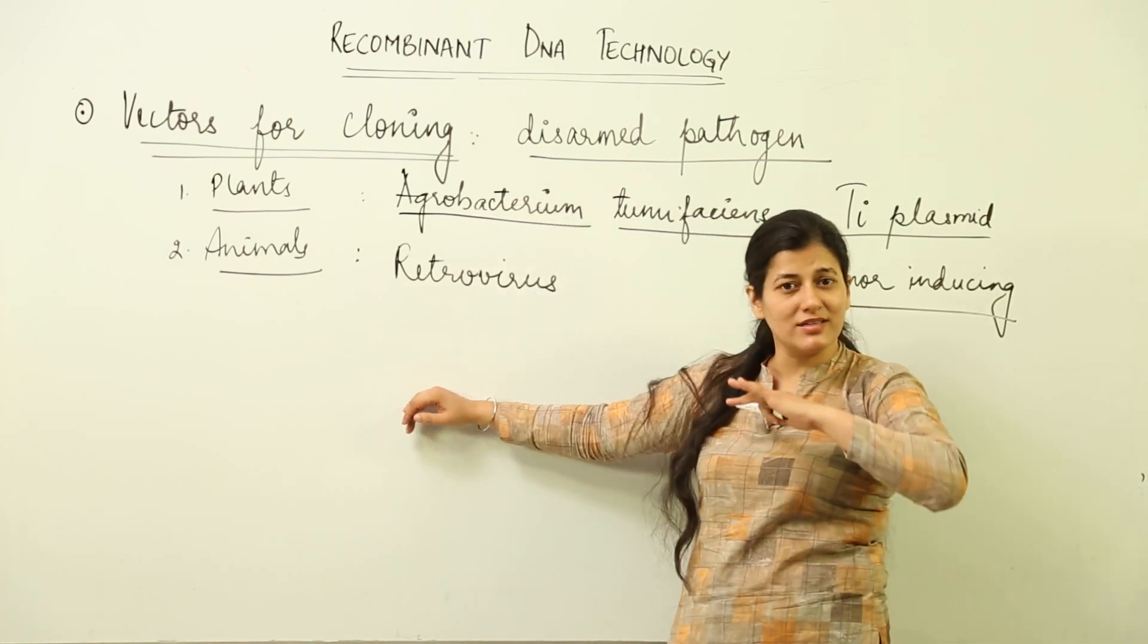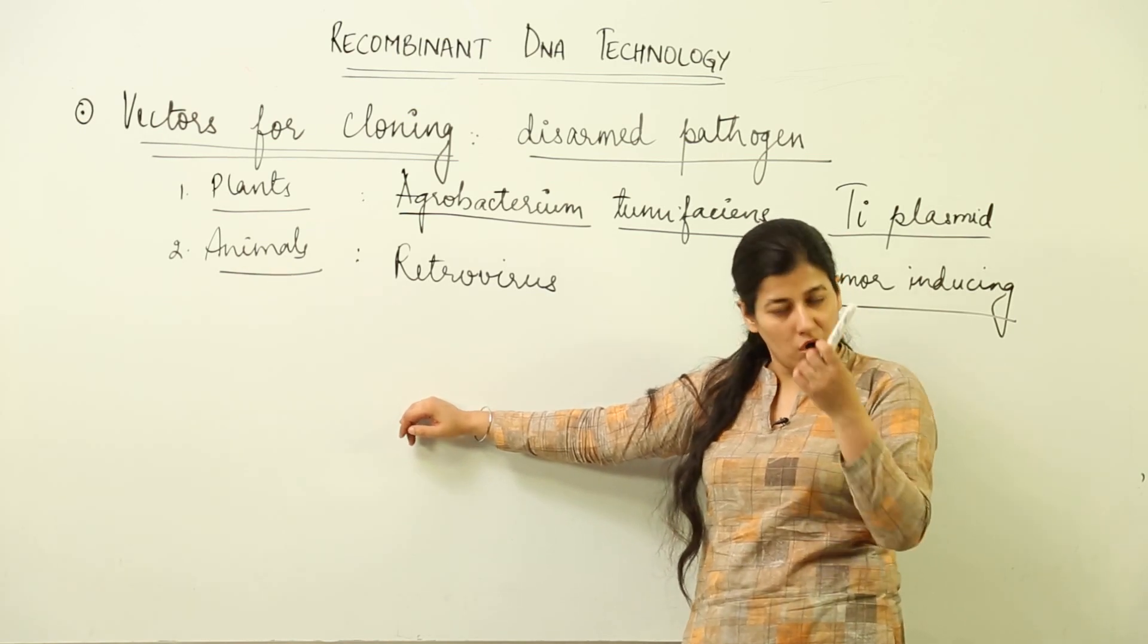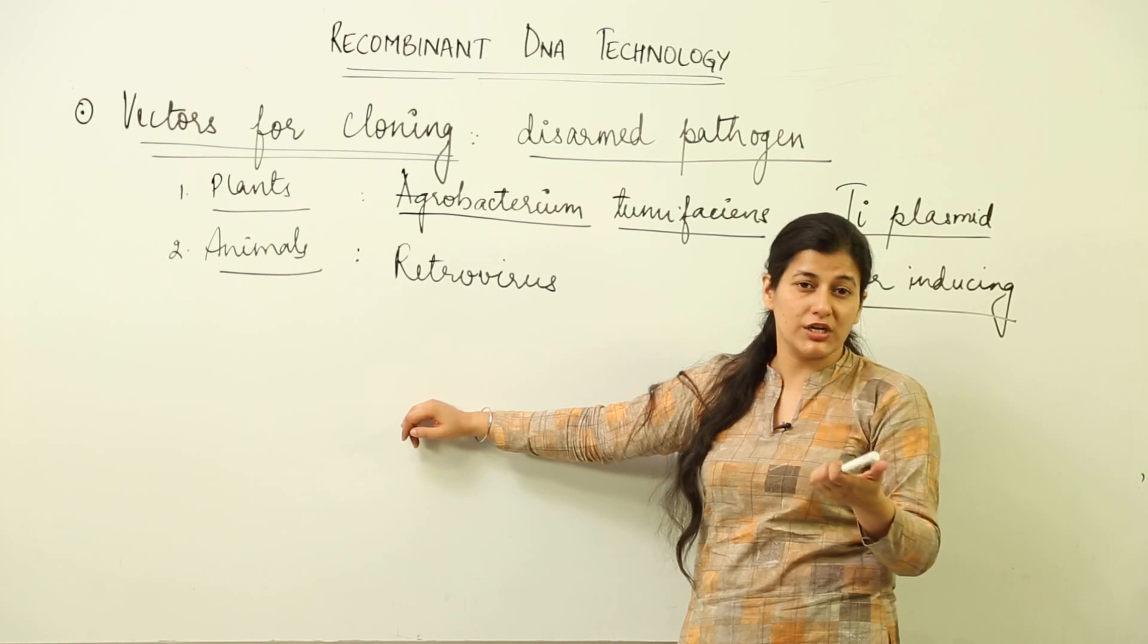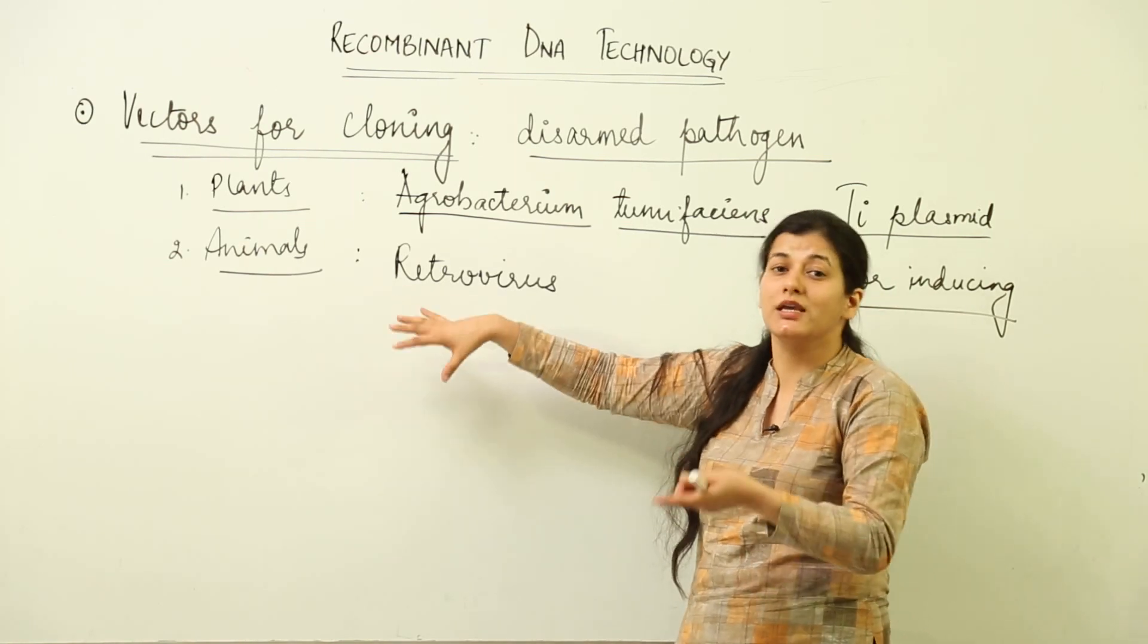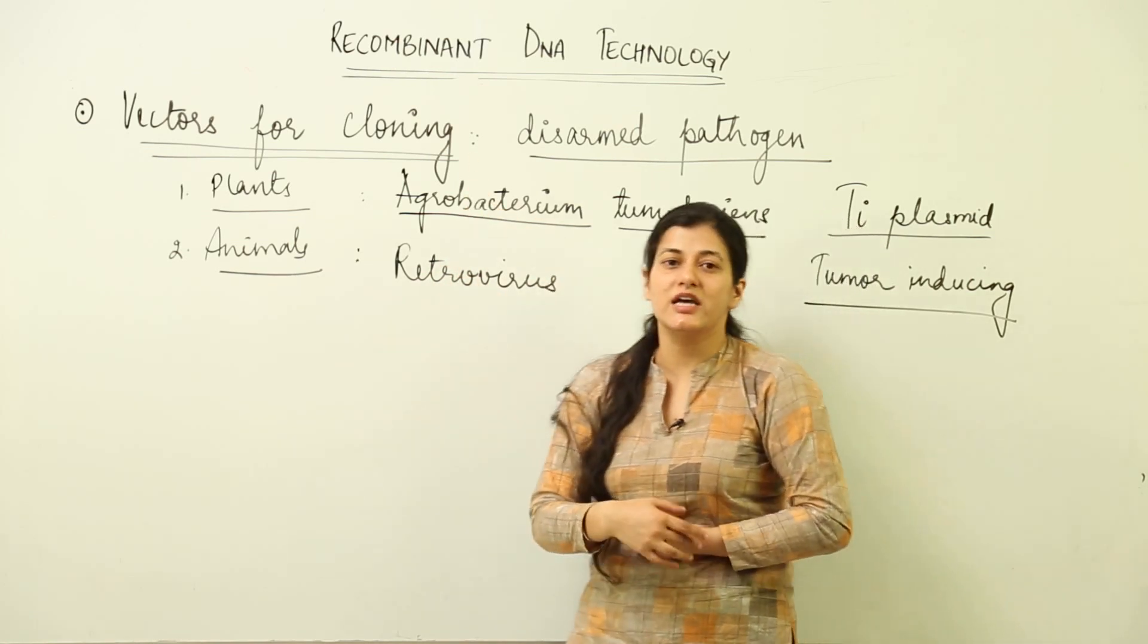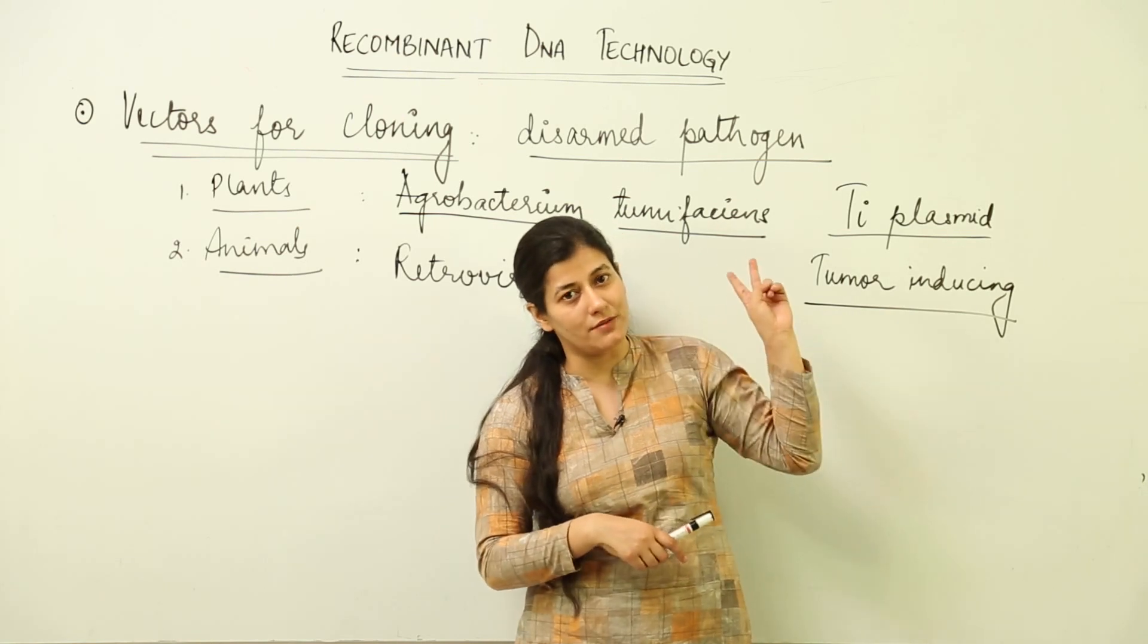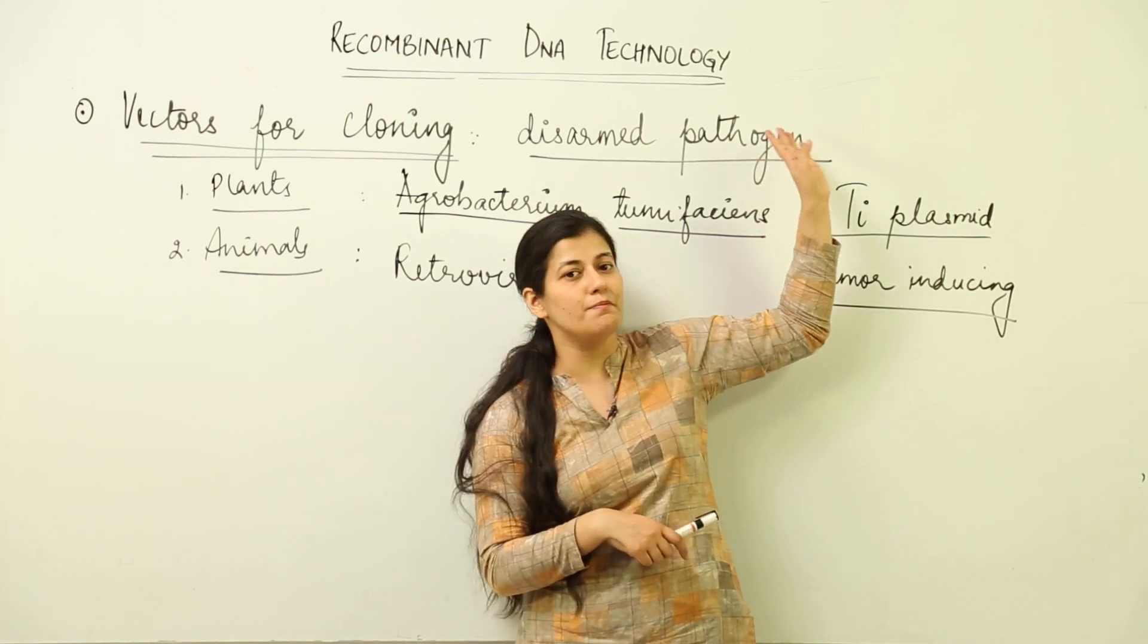And instead we put our gene of interest and hence make it also as a vector. So this you have to keep in mind, how we use various organisms that have been disarmed, how this principle of disarmed pathogen is used in vector for cloning.